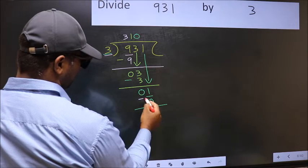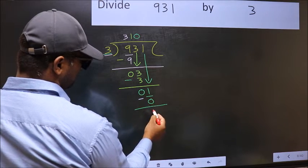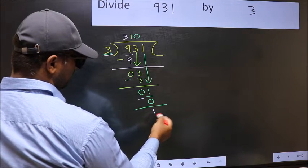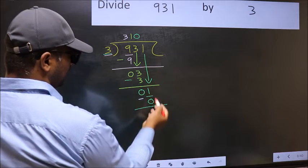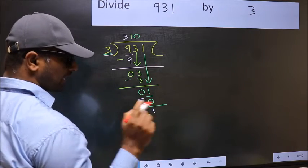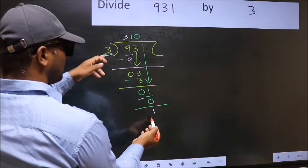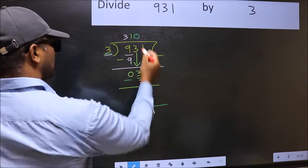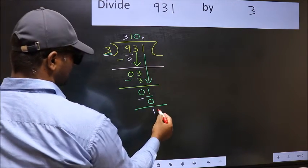Now you should subtract. 1 minus 0, 1. Over here, we did not bring any number down, and 1 is smaller than 3. So now you can put a dot and take 0.